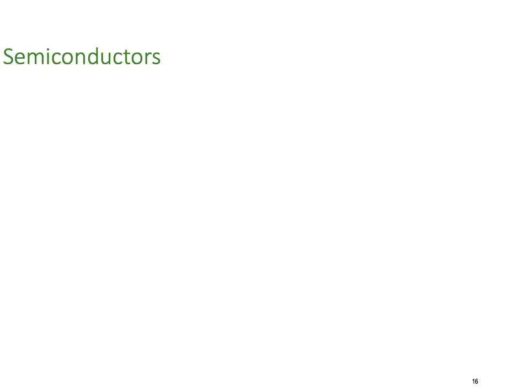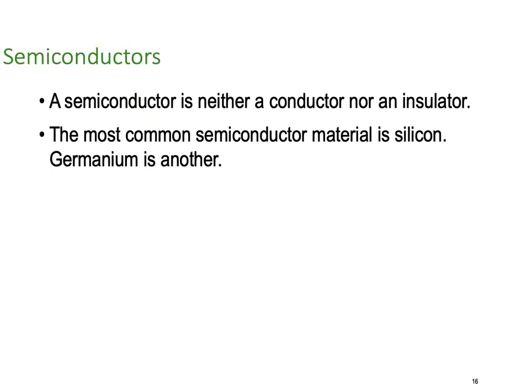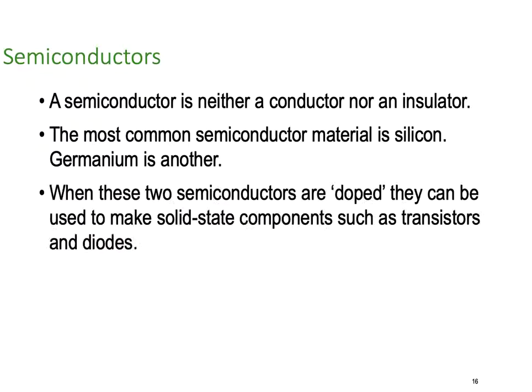Semiconductors, as their name implies: A semiconductor is neither a conductor nor an insulator, or we could say it's both at the same time. The most common semiconductor material is silicon. There is another one called germanium. When these two semiconductors are doped, they can be used to make solid state components such as transistors and diodes. When we add an impurity into the silicon, we can make them conduct when we put current through in one direction, but insulate if we put current through the other way.